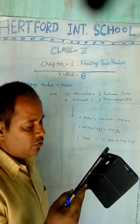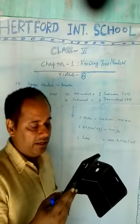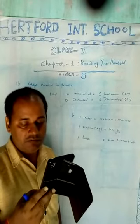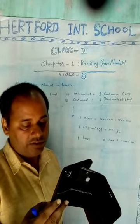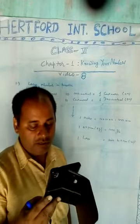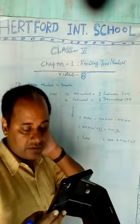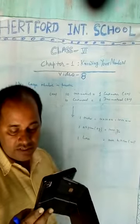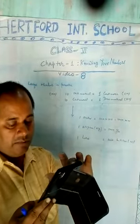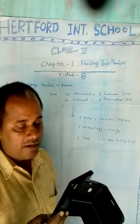We go to the market to buy rice and wheat — we buy it in kilograms and grams. But items like ginger or chilies, which we do not need in large quantities, are bought in grams. One kilogram is equal to one thousand grams. The weight of medicine tablets given to sick people is very small — it is in milligrams. One gram is equal to one thousand milligrams.